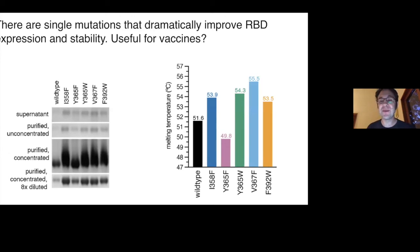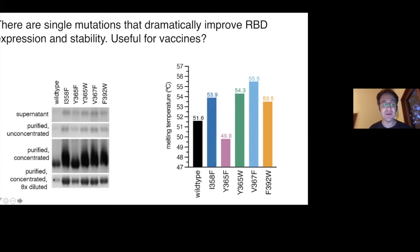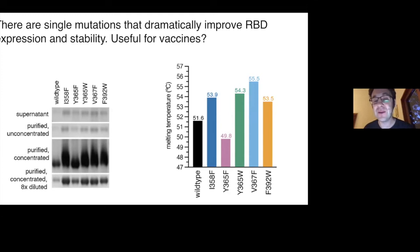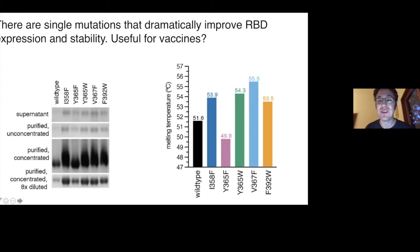We also think some things from this data set could just be super useful practically. We found some mutants to this receptor binding domain that greatly increased the expression of the protein. In mammalian-expressed receptor binding domain, the five mutants with the biggest effect on increasing expression yield substantially more protein. Correspondingly, four of these five mutations also increased the thermal stability of the receptor binding domain by anywhere from two to five degrees. Since receptor binding domain is one of the major antigens being used in vaccines, putting in these expression-enhancing and stabilizing mutations might be useful for making a receptor binding domain-based vaccine.